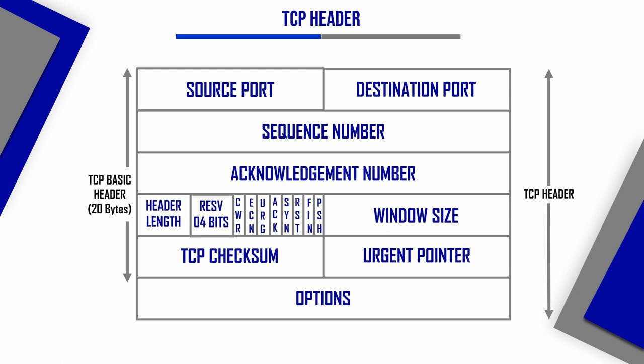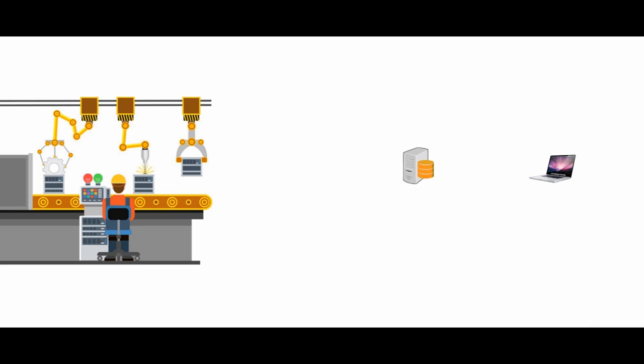Source port and destination port are 16 bits each, but the sequence number and acknowledgement number are 32 bits. To understand the sequence number, we can compare it to a serial number on products from a factory. Each product has a unique serial number that identifies it in inventory.